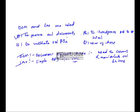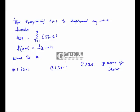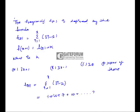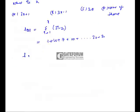The frequency f(x) is defined by the formula f(x) = Σ (i=1 to x) of (3i − 2). If we expand this: when i=1, it is 3(1)−2 = 1; when i=2, it is 3(2)−2 = 4; when i=3, it is 3(3)−2 = 7; continuing as 1 + 4 + 7 + 10 + ... up to the last term when i=x, which is 3x − 2. So f(x) = 1 + 4 + 7 + 10 + ... + (3x − 2).